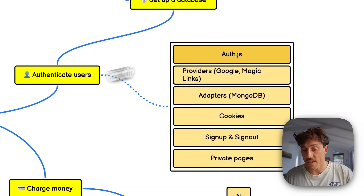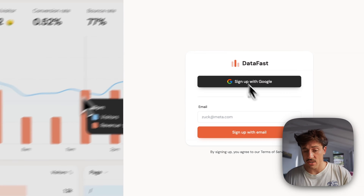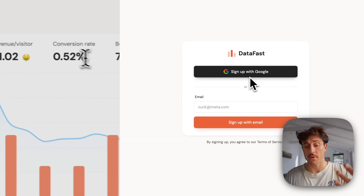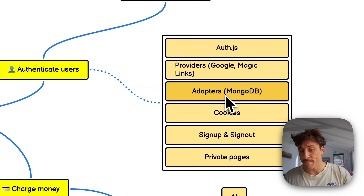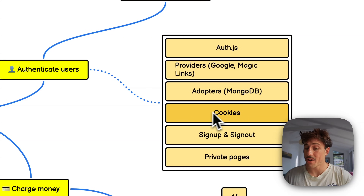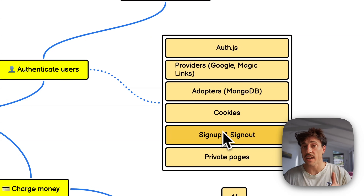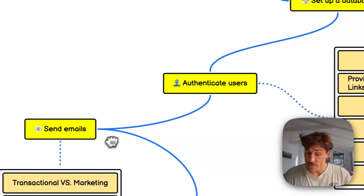To authenticate users, I use Auth.js, an open source project. With just a few lines of code you get a login page with options like 'Sign in with Google' or email. The core concepts are: providers (what services users log in with, like Google or magic links), adapters (where you store user data — in your database), and cookies (essential for authentication). You'll implement sign-in and sign-out functions, then create private pages and private API endpoints only accessible to logged-in users.